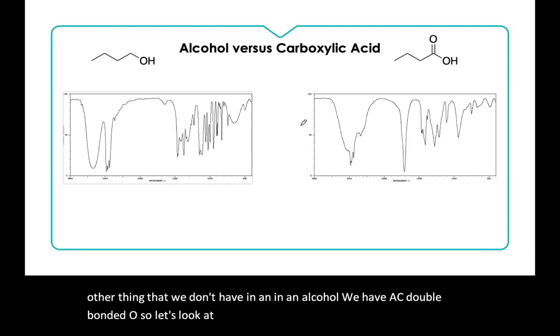So let's look at an alcohol versus a carboxylic acid. So on an alcohol, we have an OH. Okay. OHs are going to appear in that things bonded to hydrogen region all the way to the left. In a carboxylic acid, we also have an OH. But we have one other thing that we don't have in an alcohol. We have a C double bonded O. So let's look at two spectra, see if we can figure it out.